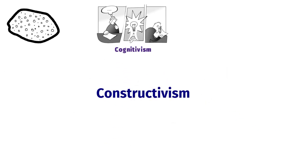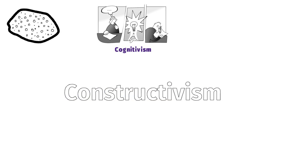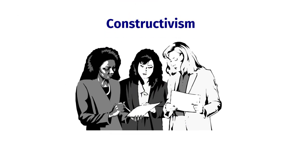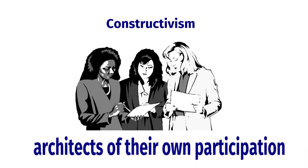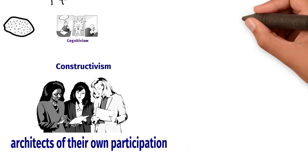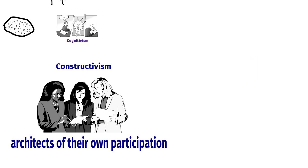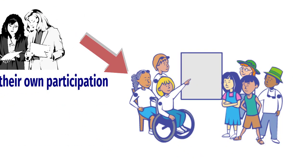A third learning theory, constructivism, moves away from the idea of acquisitive learning. Constructivist theorists perceive learning as being the result of collaboration between individuals. Through collaboration, the individuals become the architects of their own participation. They are no longer reliant upon the trainer's directions and agenda to determine how and what they learn. They can choose their own way to create their own journeys of discovery. Learning becomes a personal, lifelong pursuit, and it is through a combination of face-to-face learning with supporting learning technologies that this is most likely to happen.